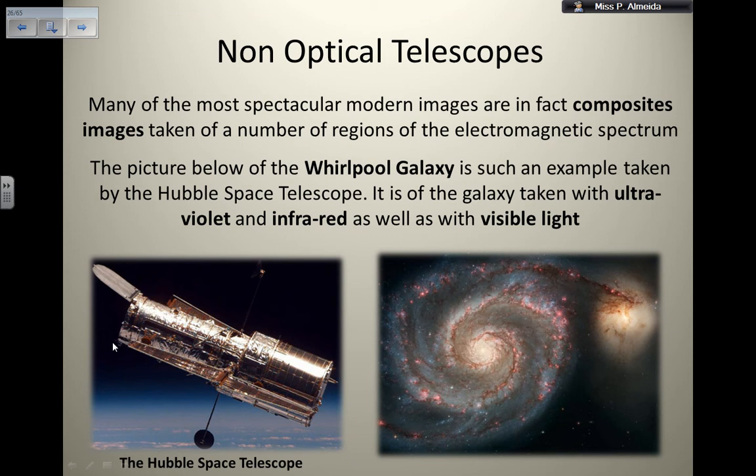So non-optical telescopes. So this is one of the images that we have, the very famous one. Most of these images that we see and that we look, they are actually not just visible light images, they are composites. So it means that they are images that have more than just one wavelength showing. This one, for example, of the Whirlpool Galaxy has ultraviolet, infrared and visible light.